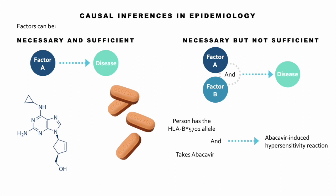In this example, if a person has the HLA-B*5701 allele and they aren't HIV positive, they would probably never know it and there would never be an issue. But if they have the allele and they're prescribed abacavir, then they may have an abacavir-induced hypersensitivity reaction. So both factors have to be present to cause that reaction.